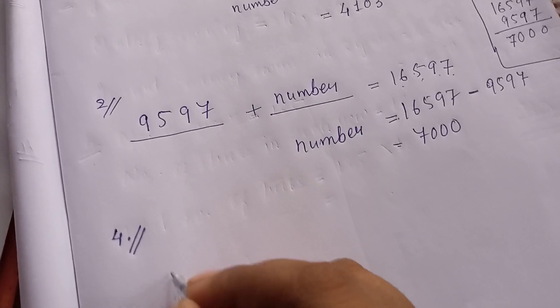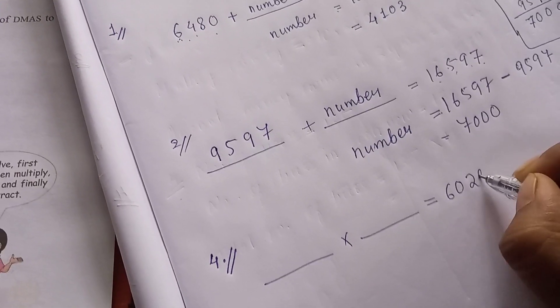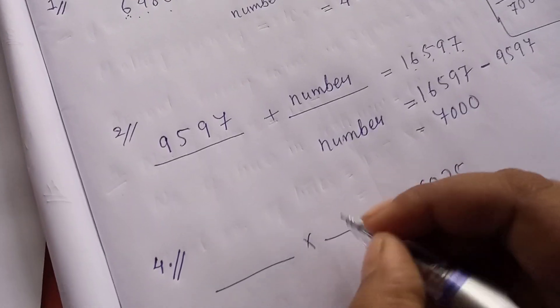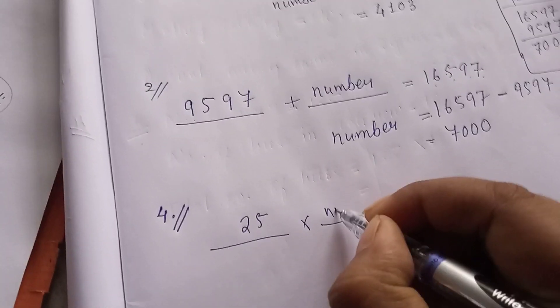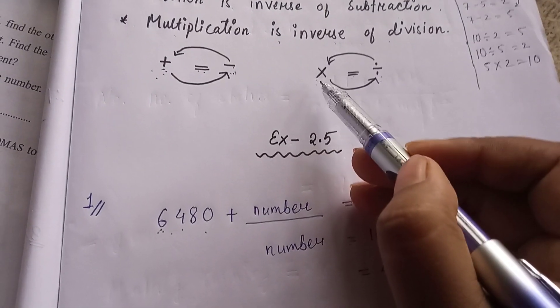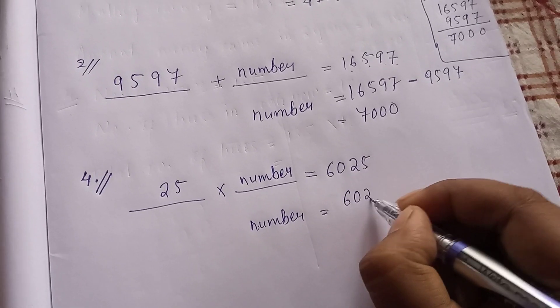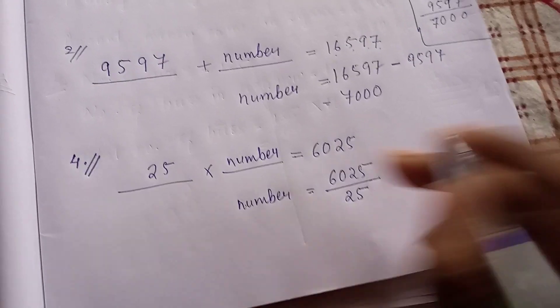Two numbers are multiplied with each other and the product is 6,025. One of those numbers is 25, and we have to find the other. Always remember: when a multiplication sign goes to the right side it becomes division. So we divide 6,025 by 25.